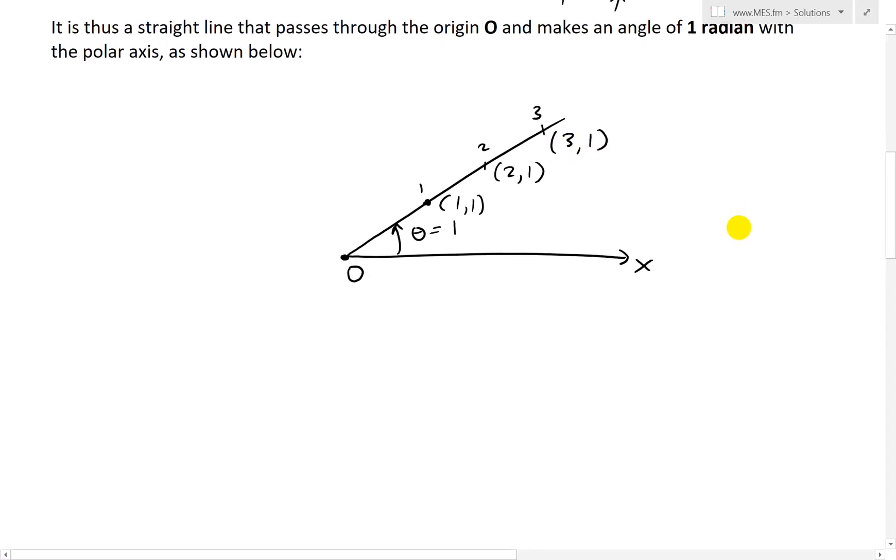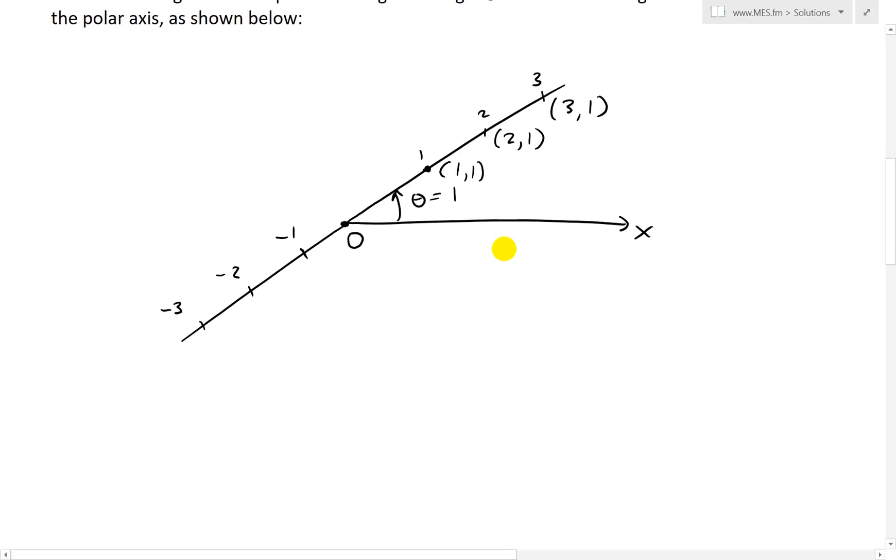But you could also go backwards. So you can go backwards, and it will be a straight line. And when we go backwards, remember that what we do is end up having a negative value. So we get a negative 1 here for r, negative 2, negative 3. And then this point here is going to be negative 1, and the angle is just 1.